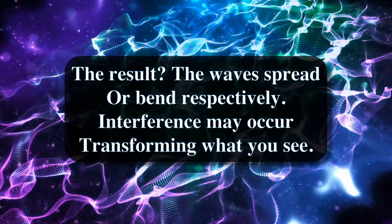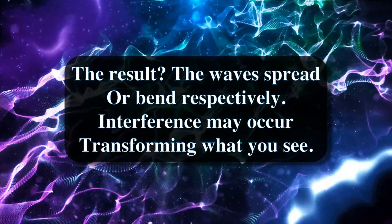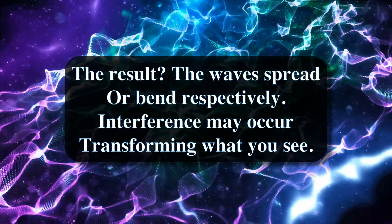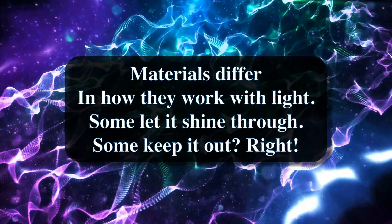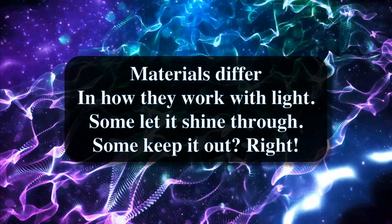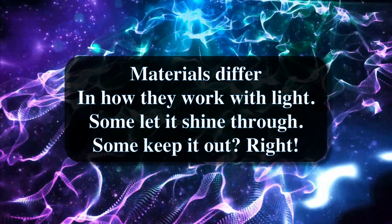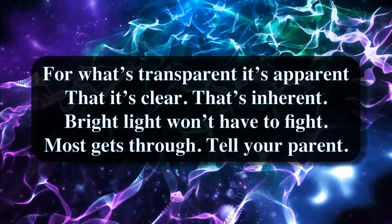When diffracting, light passes through a narrow gap or across an edge that's in its path — the result: the waves spread or bend respectively. Interference may occur, transforming what you see. Materials differ in how they work with light: some let it shine through, some keep it out.